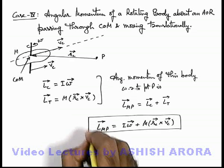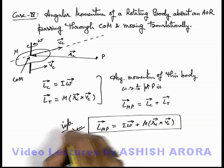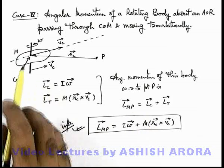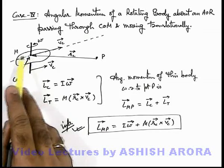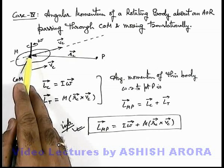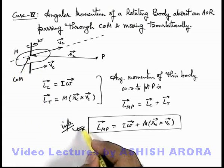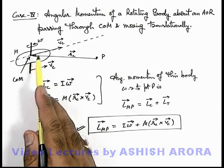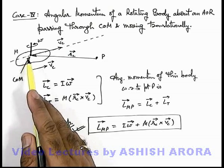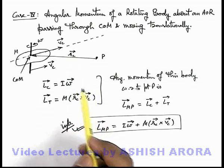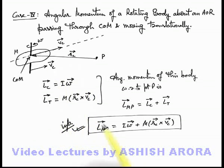This is quite an important expression to keep in mind. You can use this whenever a body is rotating about a translationally moving axis passing through the center of mass. If the axis is not passing through the center of mass, you must not use this relation. The analysis of cases where the axis does not pass through the center of mass is out of the scope of this article and may be studied further in advanced cases of angular momentum.